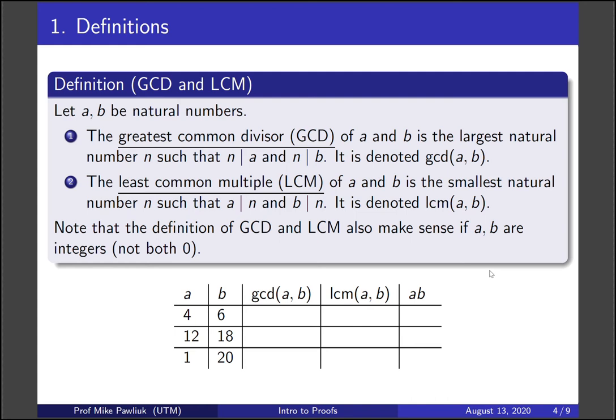For four and six, the greatest common divisor is two. Well two is the only divisor of four, two and four are, but four doesn't divide six, so two is the greatest common divisor. And their least common multiple is twelve. So twelve is both a multiple of four and a multiple of six, and it's the smallest multiple that does that.